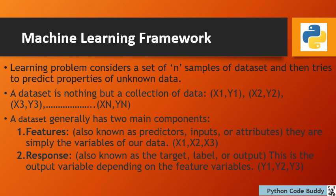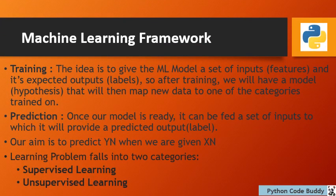A data set generally has two main components. First, features — also known as predictors, inputs, or attributes — which are simply the variables of our data, like the x1, x2, x3 coordinates. Then the response, also known as the target label or output, which is the output variable depending on the feature variables, like y1, y2, y3.